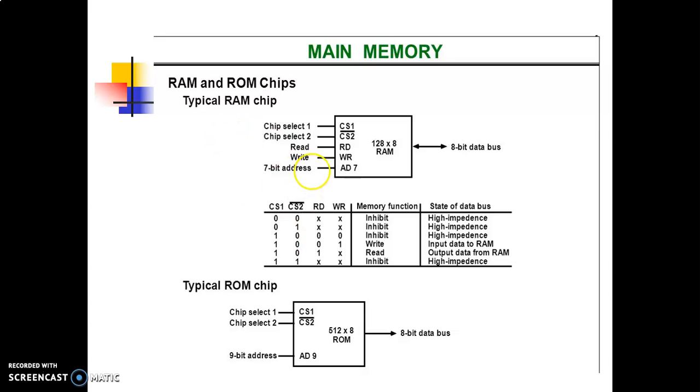The read and write inputs specify the memory operation, and two chip select control inputs are here, along with the address lines. This is the simple configuration of 128x8 RAM.